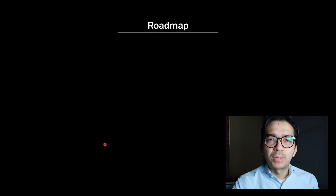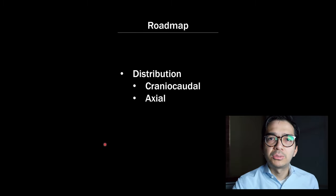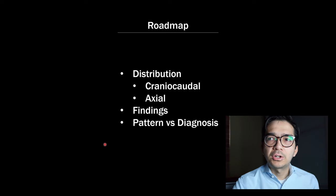So this is the roadmap I want to go through. First, we're going to talk about the distribution of disease. When we talk about distribution in interstitial lung disease, there are two ways we can classify that: the craniocaudal dimension and the axial dimension. Then we're going to talk about specific findings I include in my report, and third, we're going to talk about the idea of a pattern versus a diagnosis.